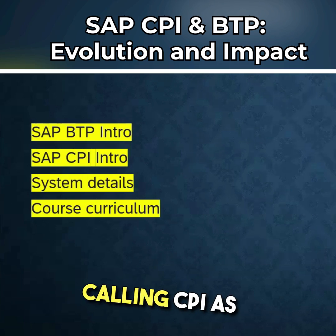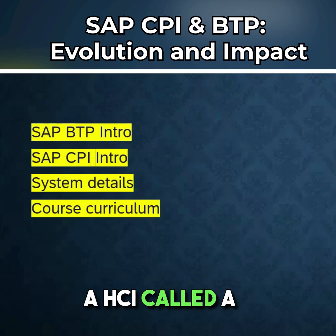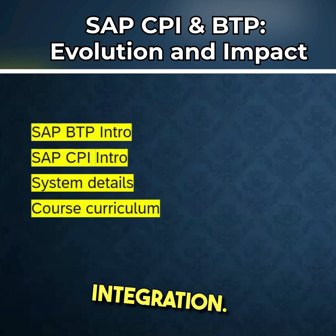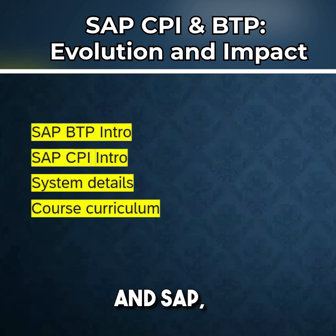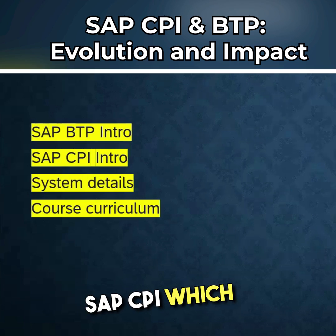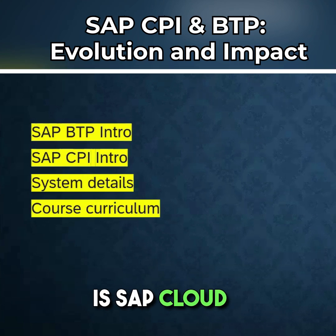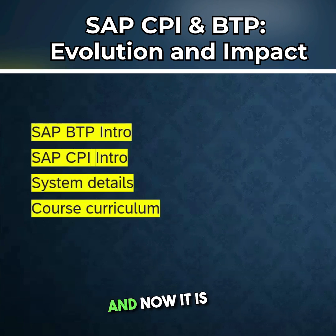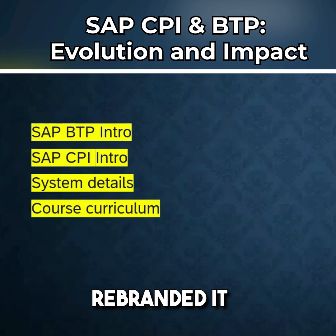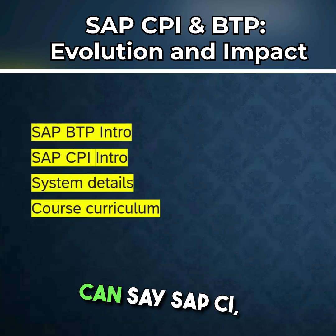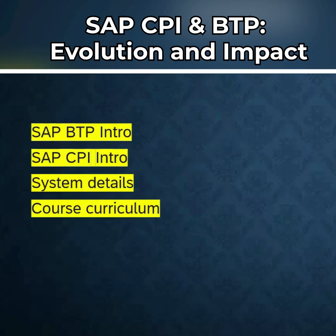Earlier, we were calling CPI as HCI — HANA Cloud Integration. Later, the name was rebranded and SAP gave the name SAP CPI, which is SAP Cloud Platform Integration. And now it has been changed again and rebranded. They are now saying SAP BTP CI, or you can say SAP CI, that is SAP Cloud Integration.